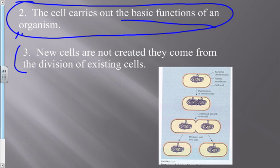Here's the problem with cancerous cells: they're your cells, so your body doesn't recognize them as a problem. They divide out of control because the mechanism that would tell them they're broken is what's broken — so they just keep dividing and eventually form a mass or a lump. That's usually the first sign that someone has a cancerous tumor. There's no way for your body to get rid of it because your immune system won't attack your own cells.